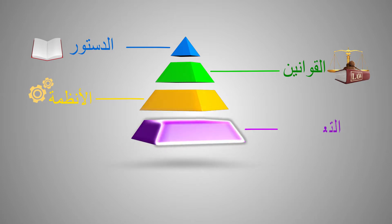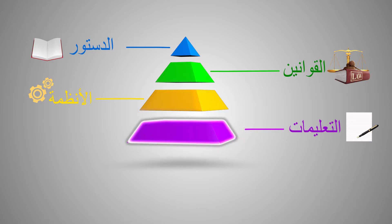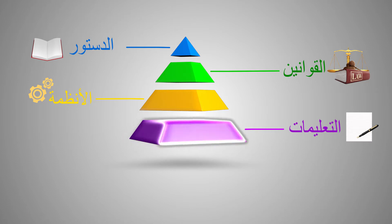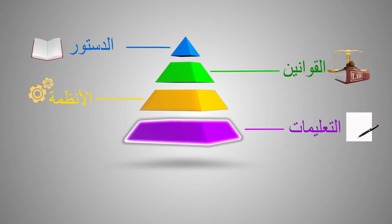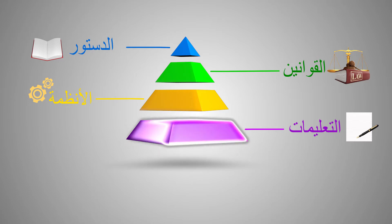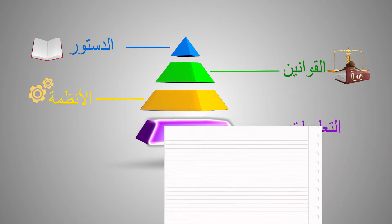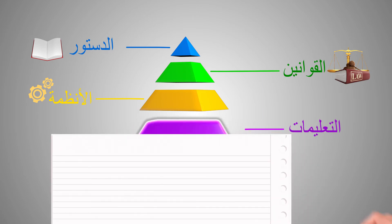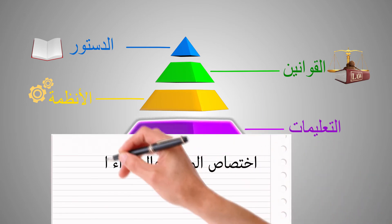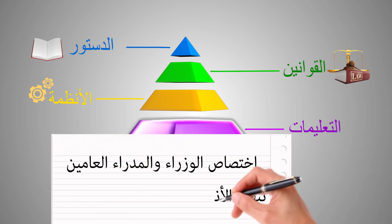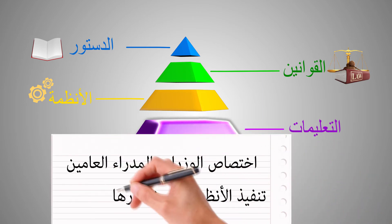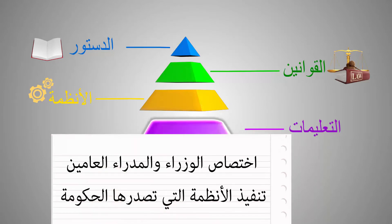Fourth, instructions. The minister is responsible for managing all the affairs of his ministry. The same applies to general directors and their departments. Accordingly, issuing instructions is the responsibility of ministers and general directors to implement the regulations issued by the government. Instructions are the last tier of the legislative hierarchy.